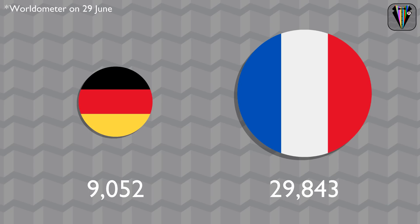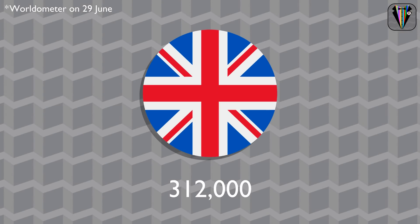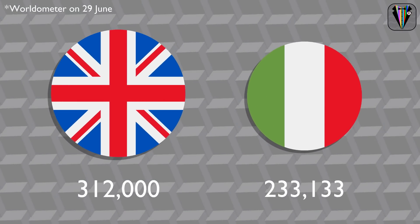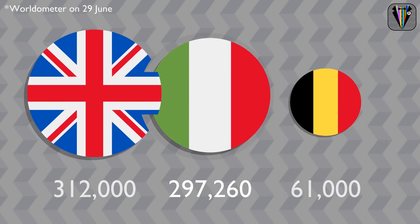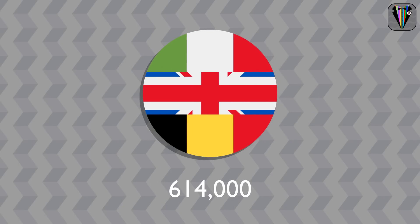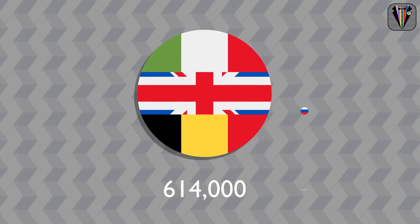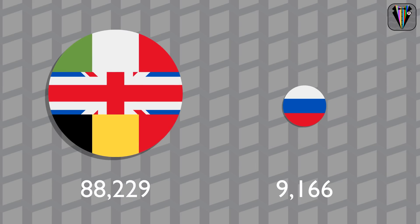The UK has reported 312,000 cases, Italy 240,000 and Belgium 61,000, which means they all combined have around 614,000 cases — less than Russia with 641,000. But Russia is nothing compared to them in terms of the death toll. In fact, they have recorded ten times the number of deaths in Russia.